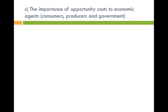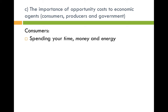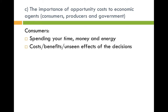Point C: the importance of opportunity cost to economic agents — consumers, producers, and government. For consumers, it's about how you spend your time, money, and energy on one thing instead of another opportunity. For instance, instead of going shopping, you decided to do some study. The costs and benefits of these alternative decisions, as well as the unseen effects, must all be considered. For example, if you're going to do some baking, you have to consider all the washing up and mess that comes with it.